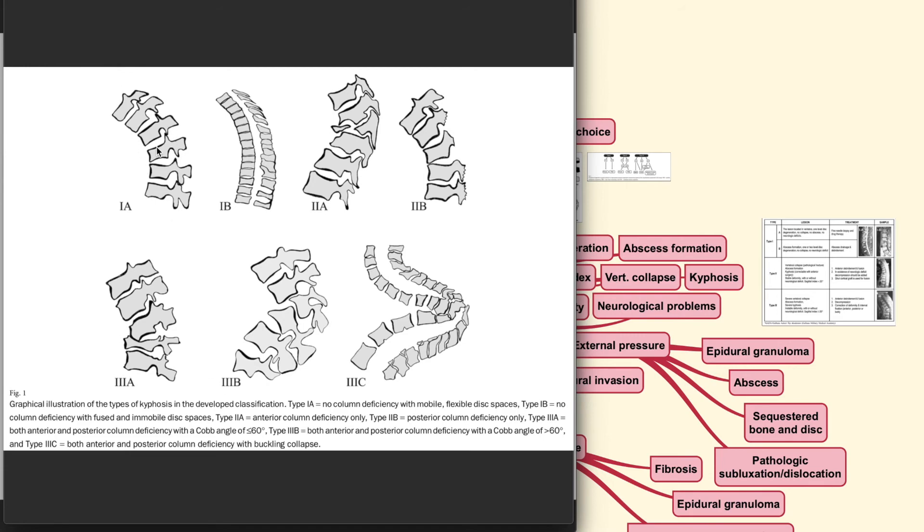While for the type 1, usually you cannot find any column deficiency and what differentiates type 1A and 1B is that in 1A, the spine appears to be normal and mobile and also flexible. While for the type B, although there are no column deficiency, there is some type of fusion that goes on around there in healed condition and there is also an immobile disc spaces.